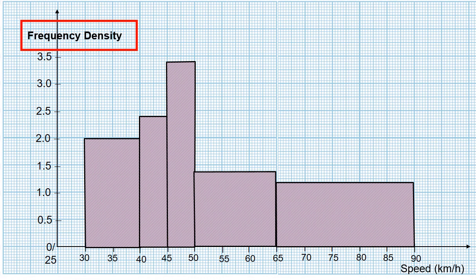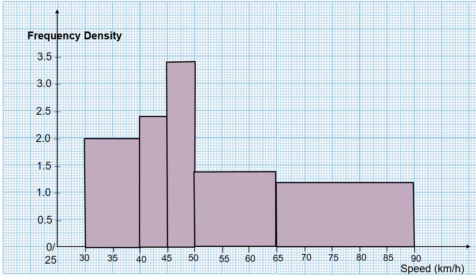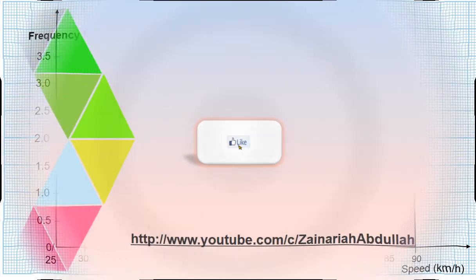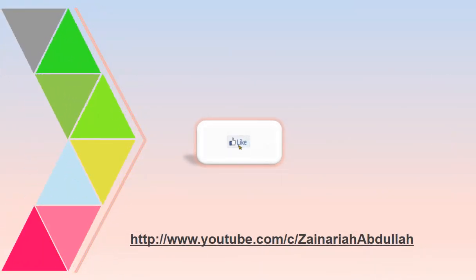This is how our histogram looks like. In conclusion, the height of the bars of the histogram depends on the size of the class intervals, since the area of the bars represents the frequency of the histogram. That is all for today. I hope this lesson video has helped you understand how to construct histograms accurately. Don't forget to press the like button, subscribe, and the notification bell.